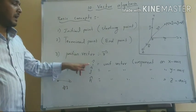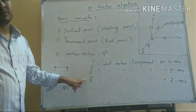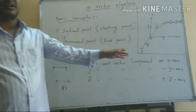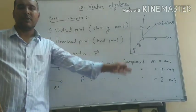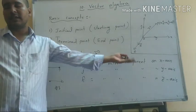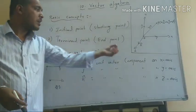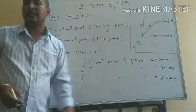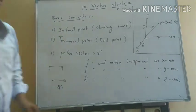First: I cap, J cap, K cap. I cap is the unit vector component on the x-axis. J cap is the unit vector component on the y-axis. K cap is the unit vector component on the z-axis. What is a unit vector? It is a component on the respective axis.